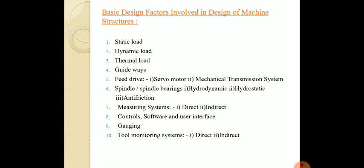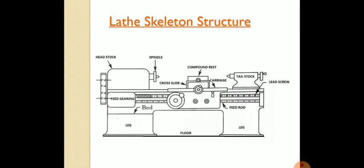Basically, first we'll be studying the different types of loads: the static loads, dynamic load, and thermal load. Before dealing with these, let me show you the lathe skeleton structure. As you can see from the diagram, this is a lathe machine. It has the headstock, the tailstock, the spindle, the compound rest, the carriage, the cross slide, the feed bearing, and the bed.